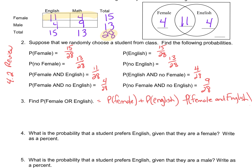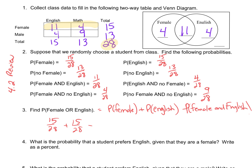Probability of female in this scenario is 15 out of 28. Probability of English is 15 out of 28. And then the double count we've got to subtract is that upper box — that 11, which is female and English — so we subtract 11 over 28. Doing the numerators: 15 plus 15 is 30, and 30 minus 11 is 19. So our answer is 19/28.